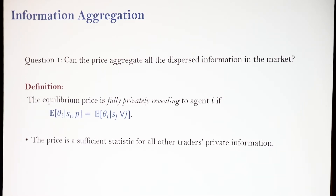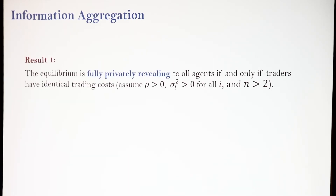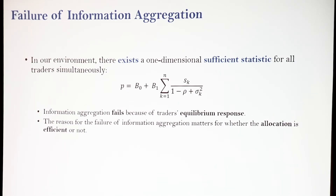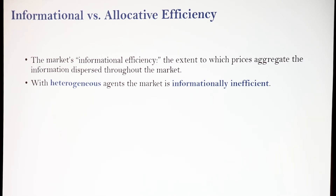Taking the Hayekian spirit — the price is fully privately revealing if by observing the price and my private information I can decide as if I knew all available information — our first result is that the equilibrium is fully privately revealing if and only if all trading costs are the same. This is intuitive because the price is a weighted average, and trading costs are unrelated to information quality. It's not that a sufficient statistic doesn't exist, but rather the equilibrium response of agents with heterogeneous trading costs makes information aggregation inefficient.